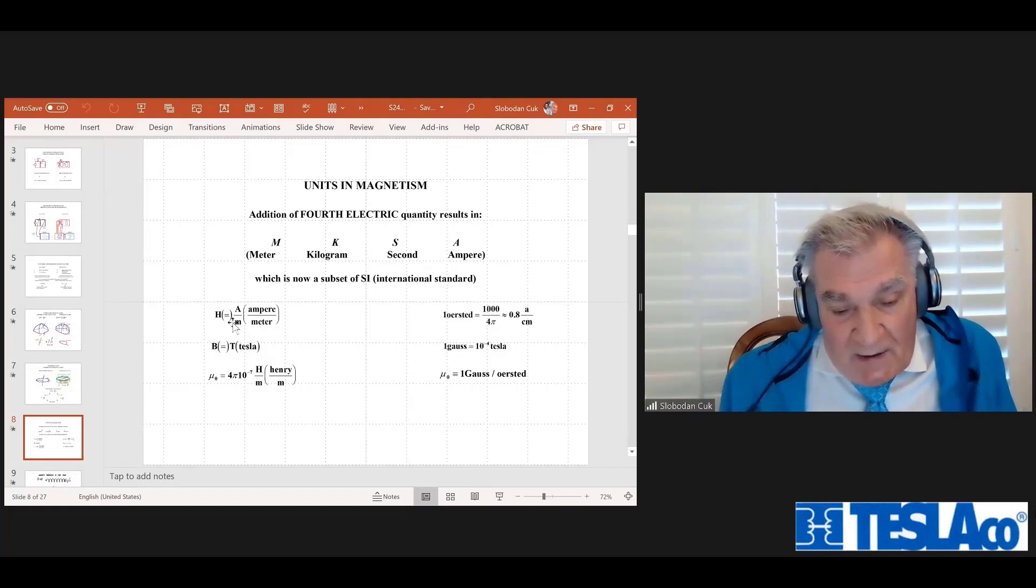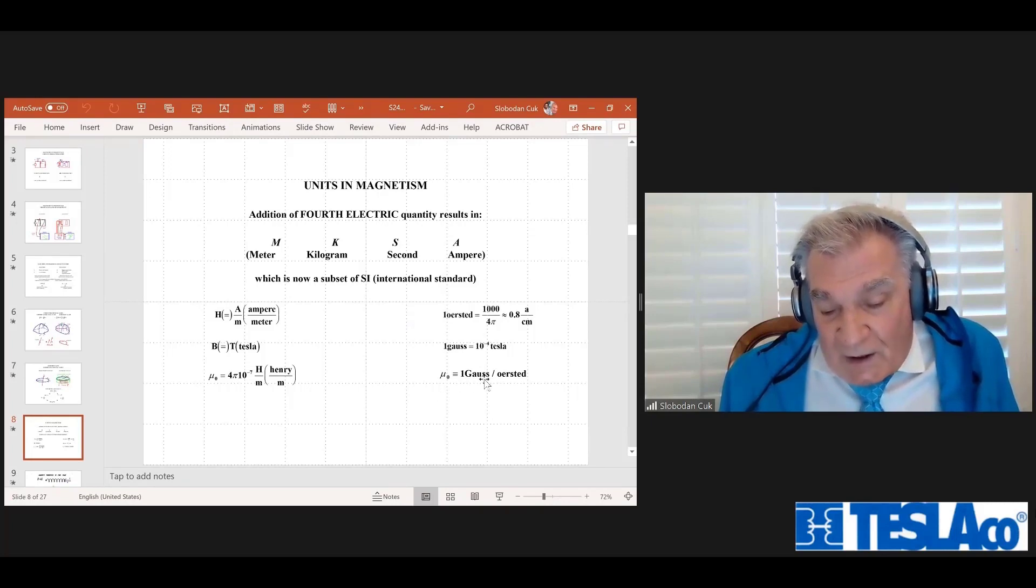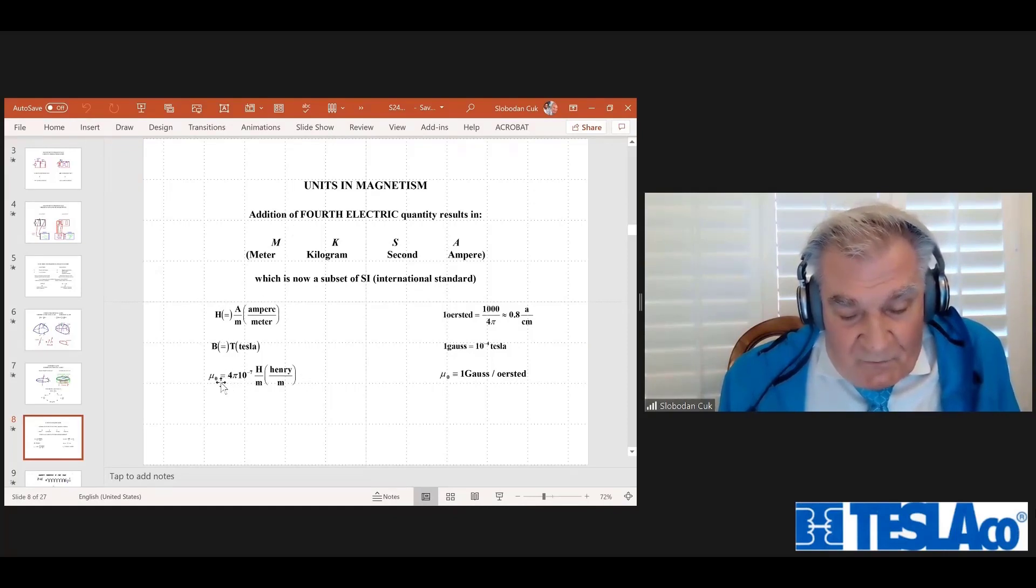And of course, here are these units, for meter, kilogram, second, and ampere - international system of units. And the unit for H field is ampere per meter. Or in Gauss system is Ørsted, which is not practical - physicists use it. But MKSA system uses Tesla for flux density. And in the Gauss system, it's Gauss, which is 10⁻⁴ Tesla. And of course, the problem with these physicists is μ₀ is one Gauss over Ørsted, whereas in the MKSA system, it's 4π × 10⁻⁷ henries per meter, which is a permeability, fixed permeability given in the MKSA system.